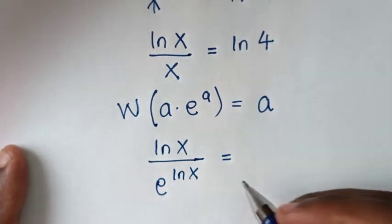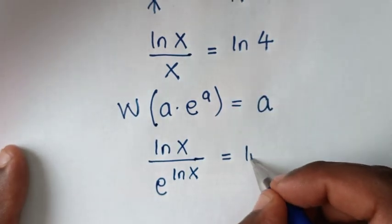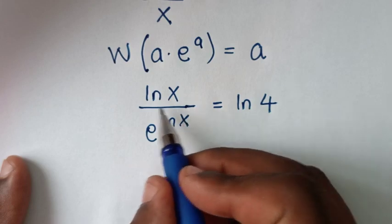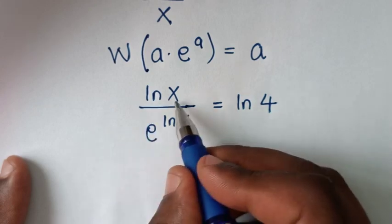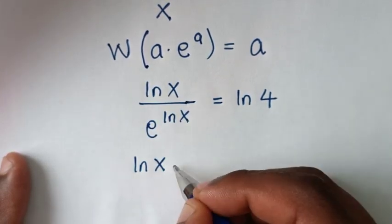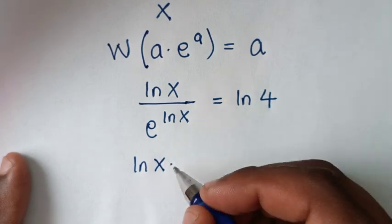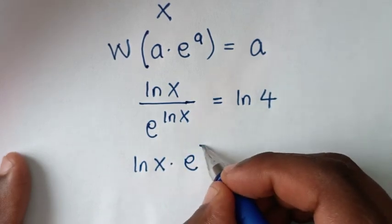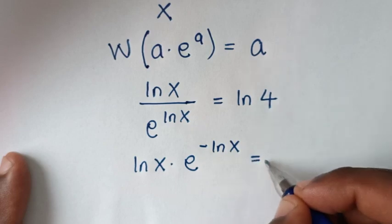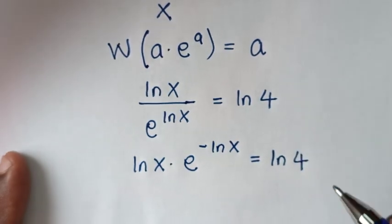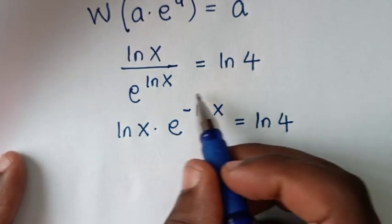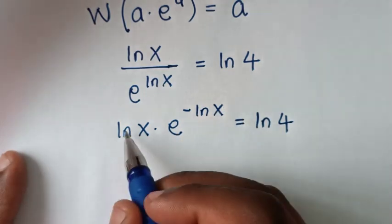In the next step, we move the denominator to the numerator, so it becomes ln(x) times e to the power of negative ln(x) is equal to ln(4).